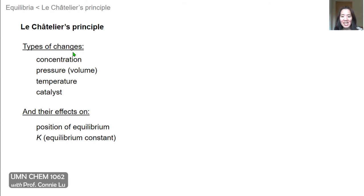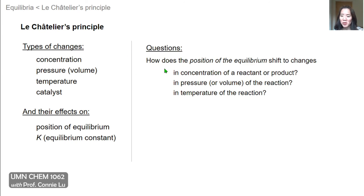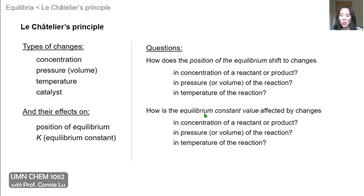To organize the rest of the lecture, we'll go through the main types of changes: concentration, pressure and volume together because they're interdependent, and temperature and catalyst. For each type of change, we want to discuss and predict the effect on the position of equilibrium and also the value of the equilibrium constant K. Notably, catalyst is a special category that we will cover separately at the end of the video.